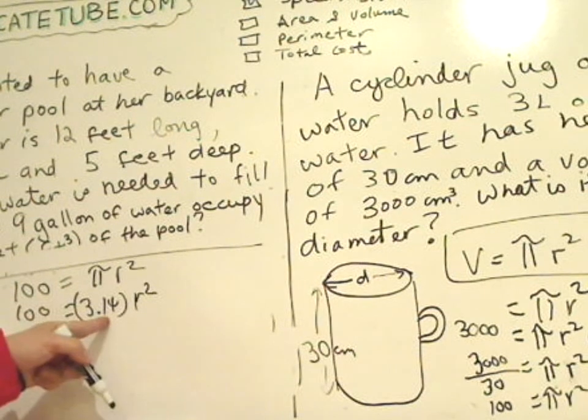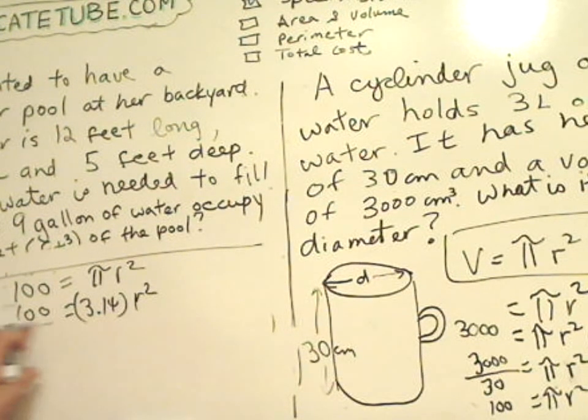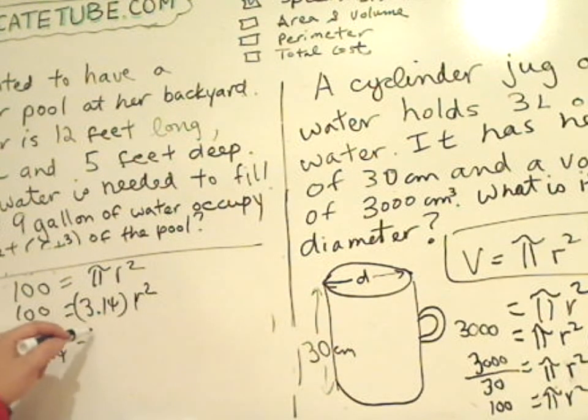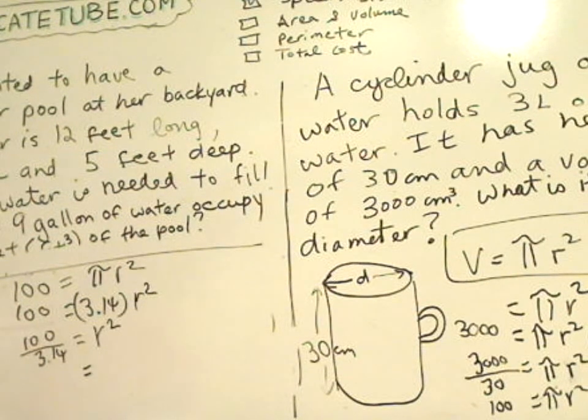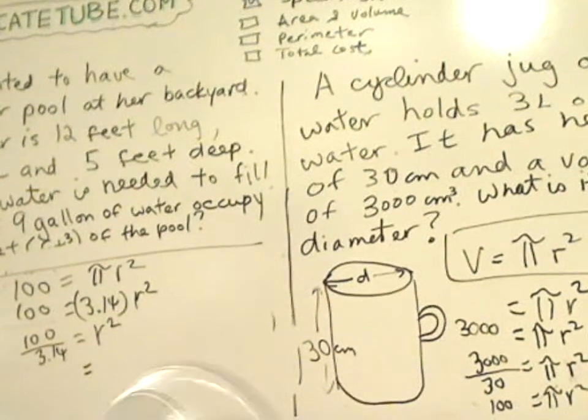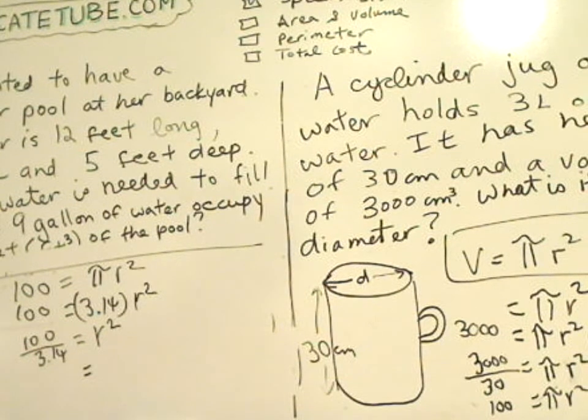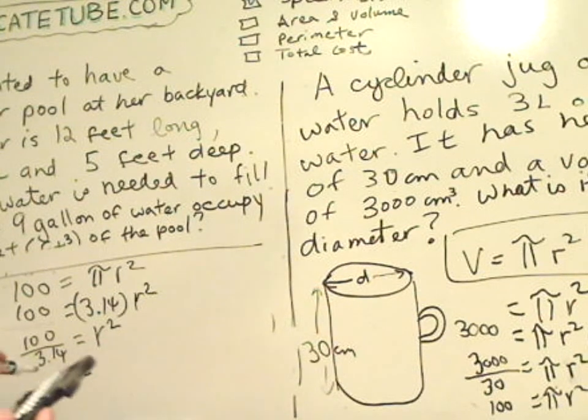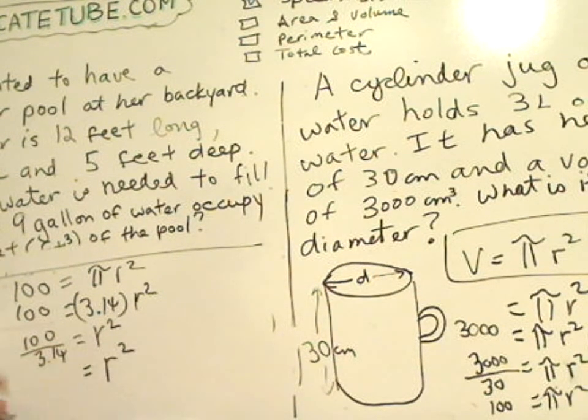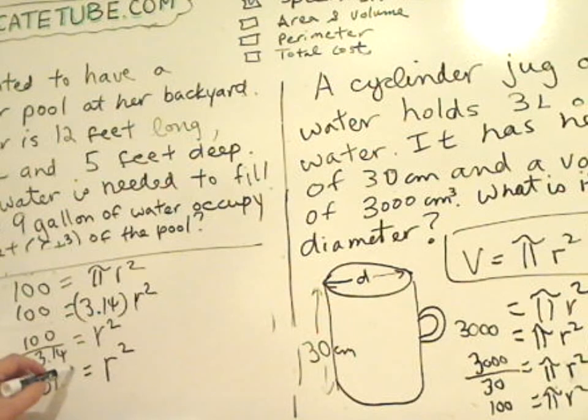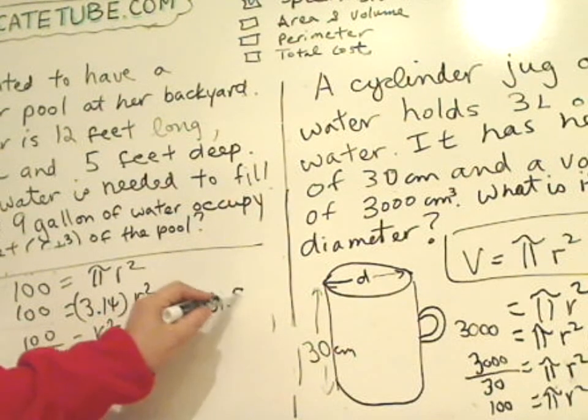And we divide, bring 3.14 over to the other side. Divide by 3.14. Now we need to find it is r equal to r squared, still. So let's see. 100 divided by 3.14. 100 divided by 3.14. We'll give you approximately, I'm going to round it. So r², still have on this side, 31.8. And now, we have r² = 31.8.